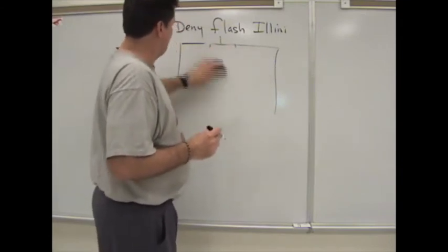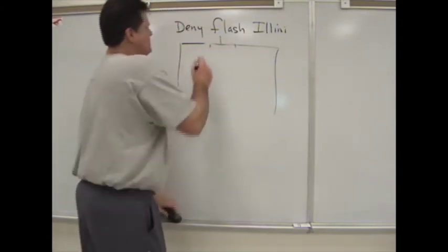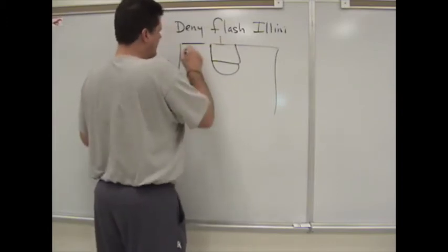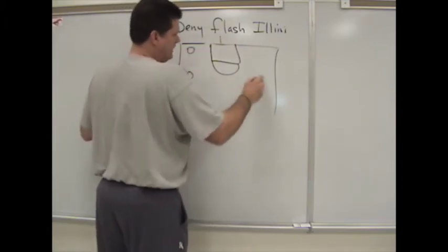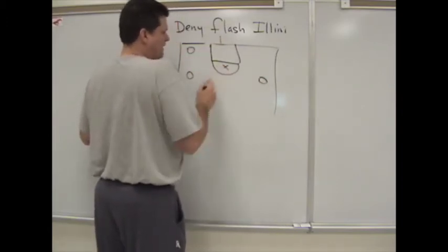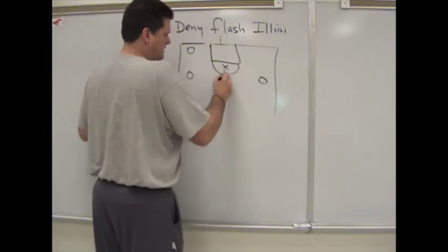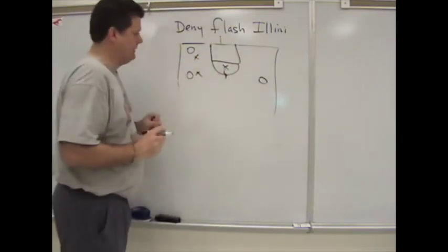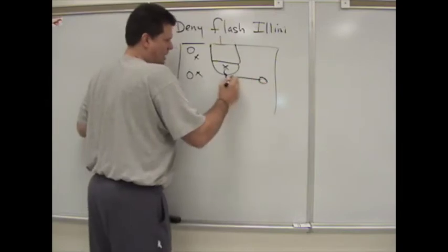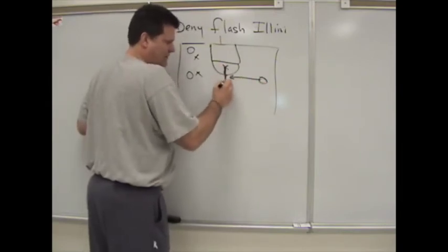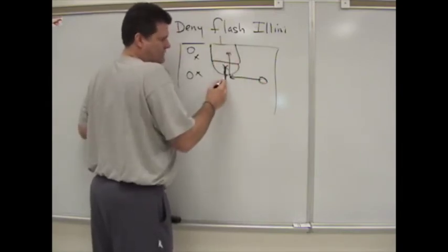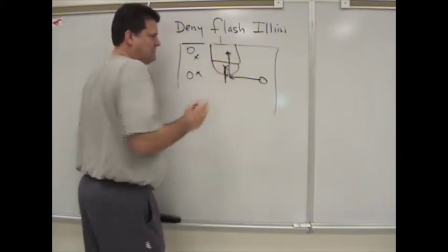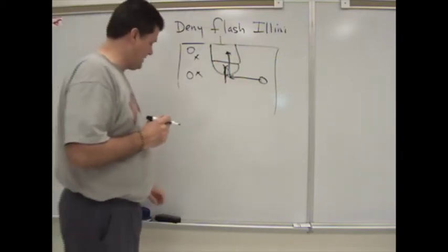So when you do that, a lot of times you can have a situation where his man's down here and the guy's over here. We're denying right here at the line of the basket, hand in the passing lane — denying here, denying here, closing the gap. If this guy comes at the ball, we're going to deny him at the line of the basket and ride him if he cuts back door. So deny at the line of the basket, ride him if he cuts back door. That's denying the flash.